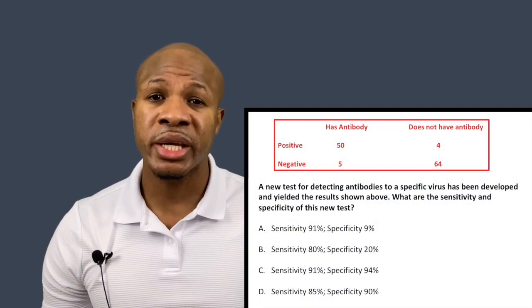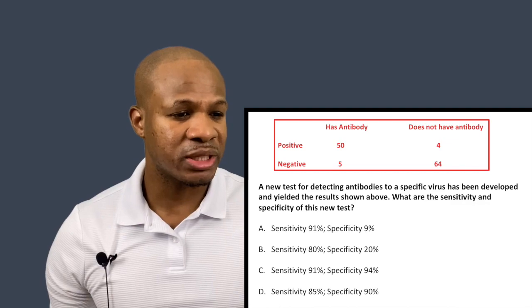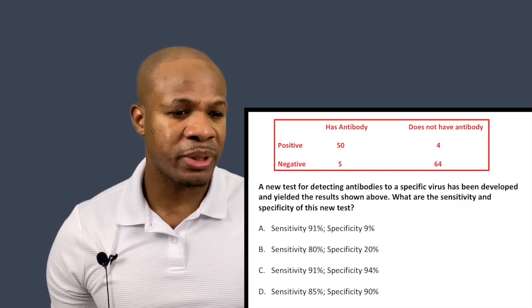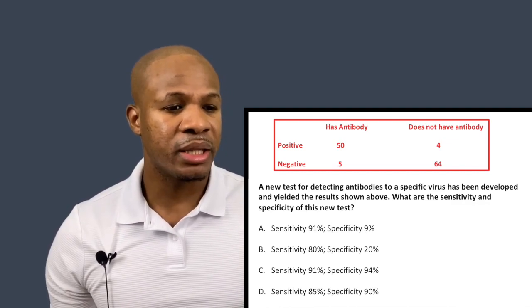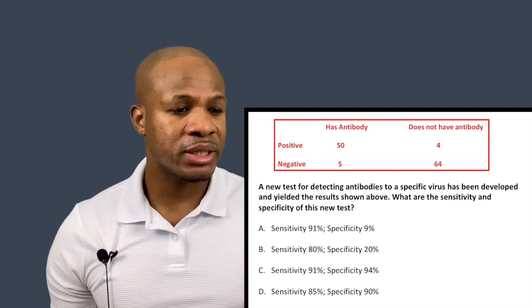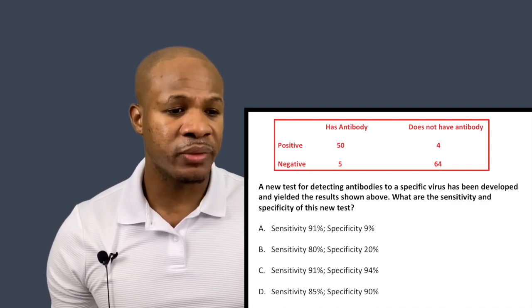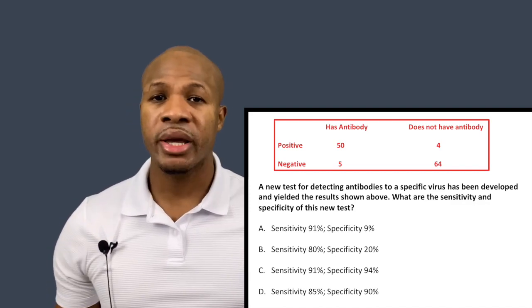With that said, today we're going to answer two questions. Let's dive into question number one. Question number one states: a new test for detecting antibodies to a specific virus has been developed and yielded the results shown above. What are the sensitivity and specificity of this new test?